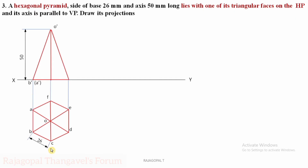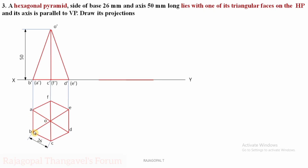Complete the front view and give notations. The apex is O dash. If you are standing as an observer from the front, only corners B, C, and D are visible. Corners E, F, and A are invisible, so A dash, F dash, and E dash are shown in brackets. If an edge is invisible from any view, it must be represented in brackets. This is the simple position for this particular question.